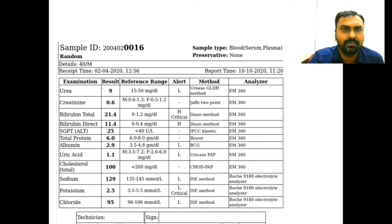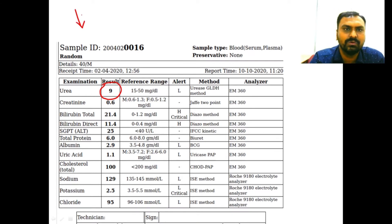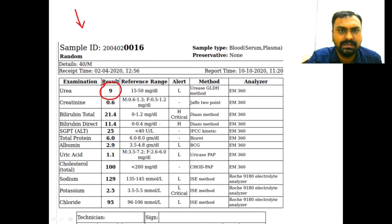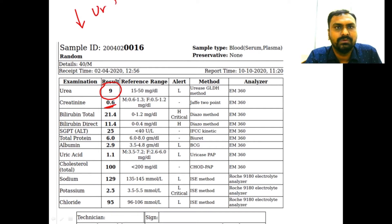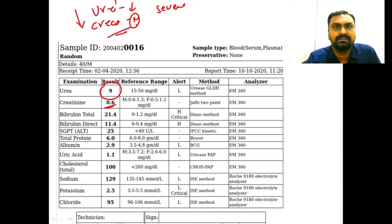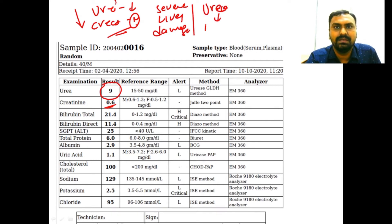In this next report, urea is lower than normal while creatinine is slightly normal. Most conditions cause elevated urea, but here urea is decreased. This may be due to severe liver damage. As we know, urea is synthesized only in the liver because the arginase enzyme is present only there.